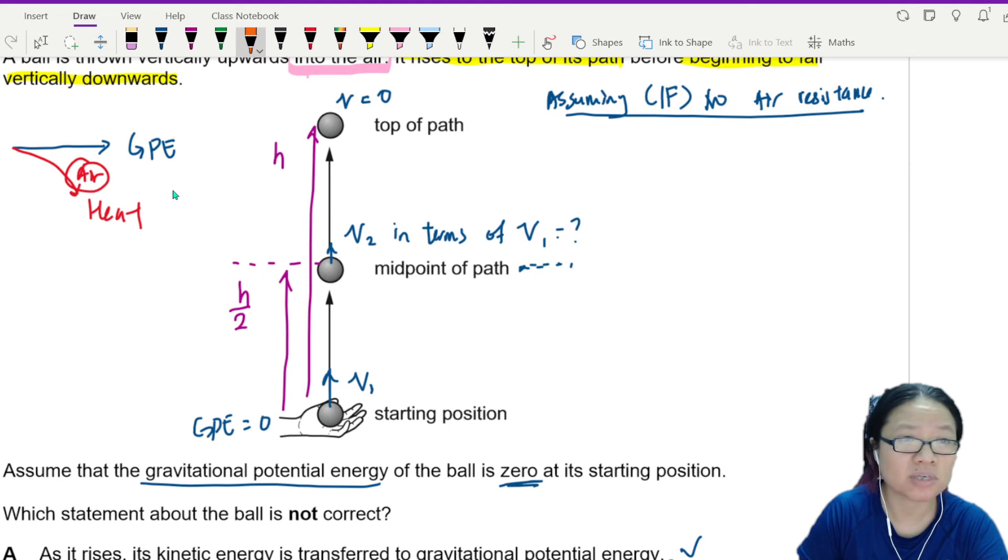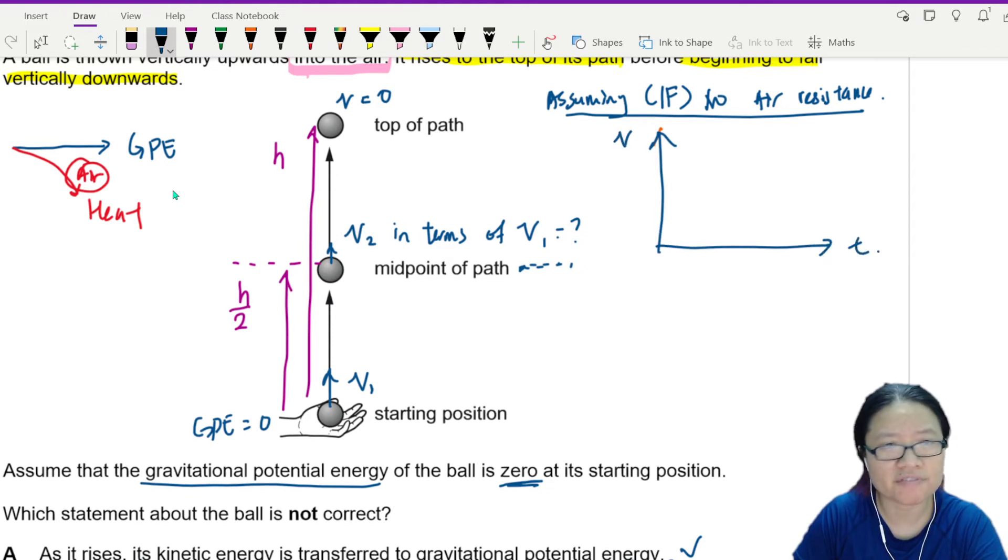I know the VT graph is a straight line. Straight line like this. And this is the top of the path. And this one is your V1. In the middle, can I say that this one will be V1 over 2? Because it's right in the middle.